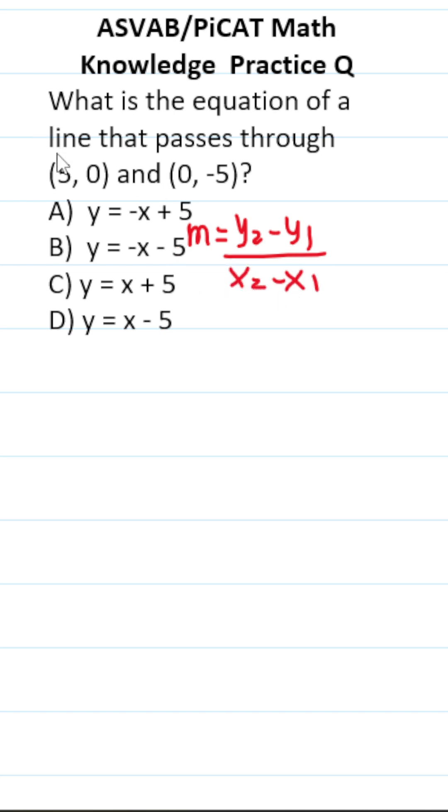Where do we get these values from? This is x1, this is y1, this is x2, this is y2. So let's go ahead and plug them in. We can see y2 is negative 5 minus y1 is 0, all over x2 is 0 minus x1, that's 5.